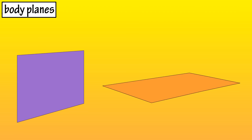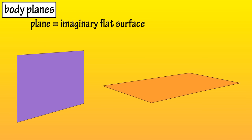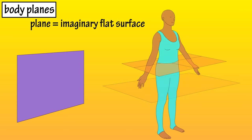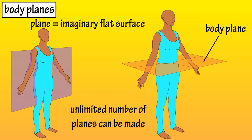Body Planes. A plane is an imaginary flat surface. Oftentimes the body is sectioned or cut along a surface or plane, which is referred to as a body plane. An unlimited number of sections can be made along an unlimited number of planes. When a section of the body or organ is cut, it's named after the plane which it occurs.